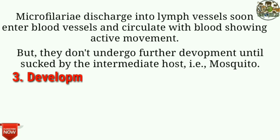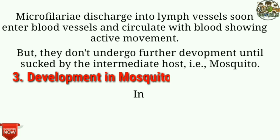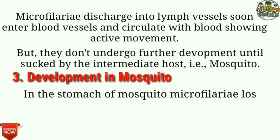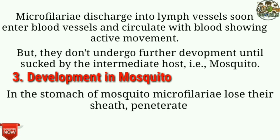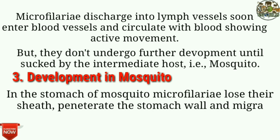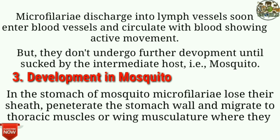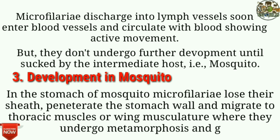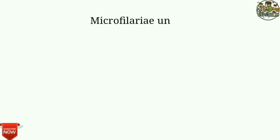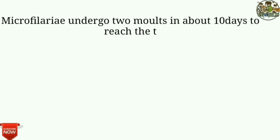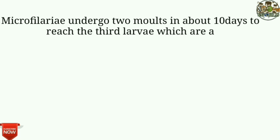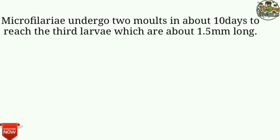Development in mosquito: In the stomach of the mosquito, microfilariae lose their sheaths, penetrate the stomach wall, and migrate to the thoracic muscles or wing musculature, where they undergo metamorphosis and grow. Microfilariae undergo two molts in about 10 days to reach the third larval stage, which are about 1.5 mm long.